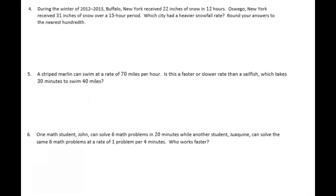Number 4: During the winter of 2012-2013, Buffalo New York received 22 inches of snow in 12 hours. Oswego New York received 31 inches of snow over a 15-hour period. Which city had a heavier snowfall rate? Round your answers to the nearest hundredth. Let's start with Buffalo. Buffalo got 22 inches in 12 hours, so we can do 22 divided by 12.